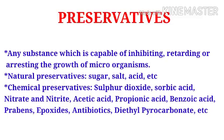Chemical preservatives include sulfur dioxide, sorbic acid, nitrate and nitrite, acetic acid, propionic acid, benzoic acid or sodium benzoate, parabens, epoxides, antibiotics, diethyl pyrocarbonate, etc. Parabens are alkyl esters of parahydroxybenzoic acid; the methyl, ethyl, propyl, and heptyl esters are generally used. Epoxides are cyclic ethers that destroy all forms of microorganisms including spores and viruses. The epoxides used as preservatives are ethylene oxide and propylene oxide.